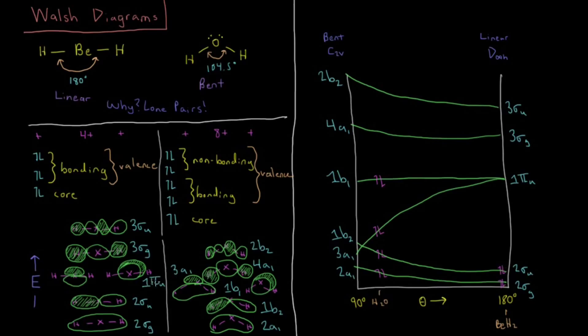as we bend these two hydrogens down and bring them more on the plus x-axis, if we call this the x-axis. So this 3a1 orbital, which used to be the 1πu non-bonding, now the 3a1 bonding orbital,